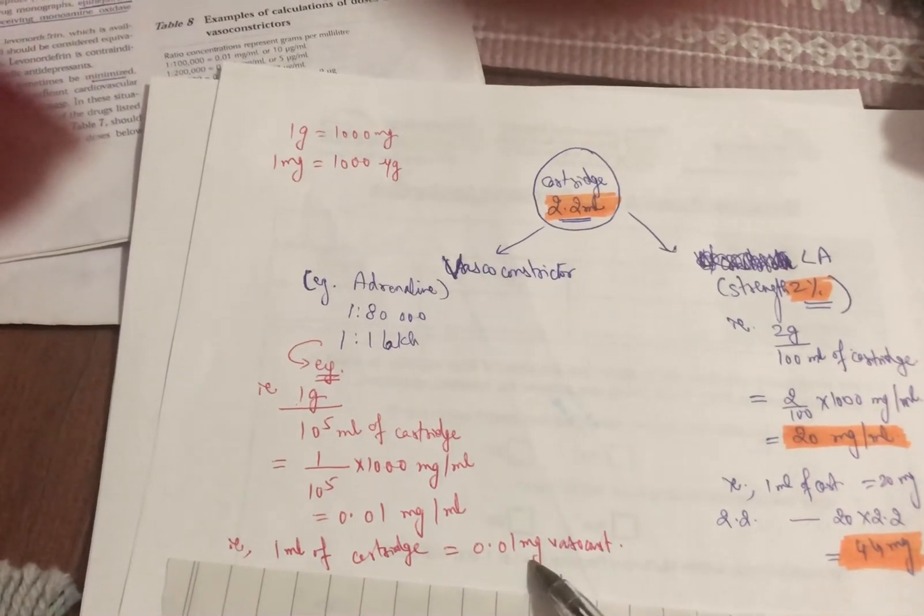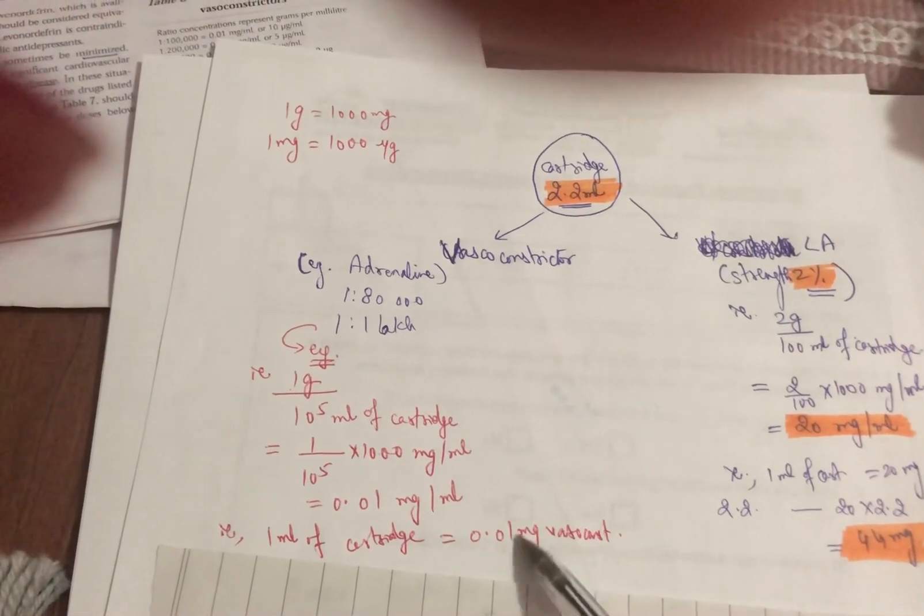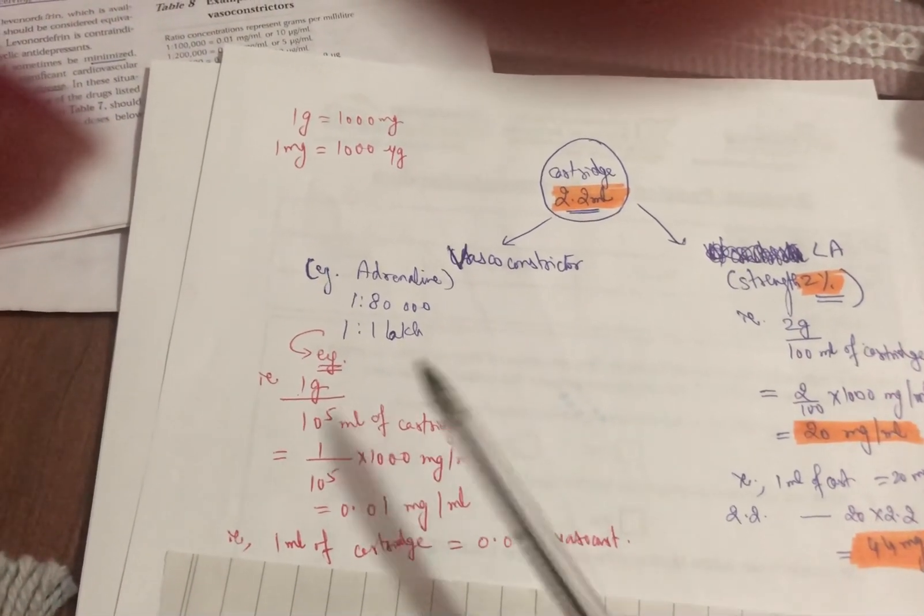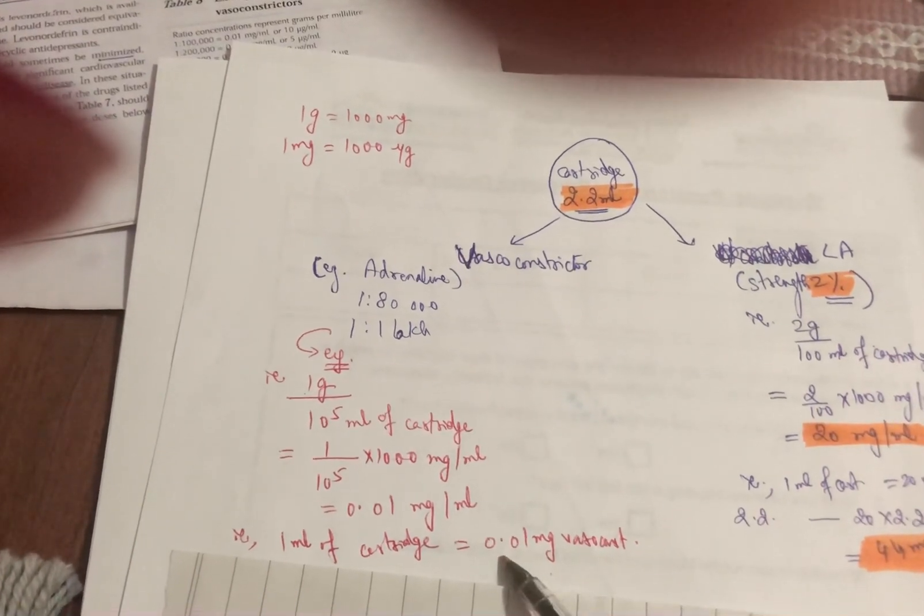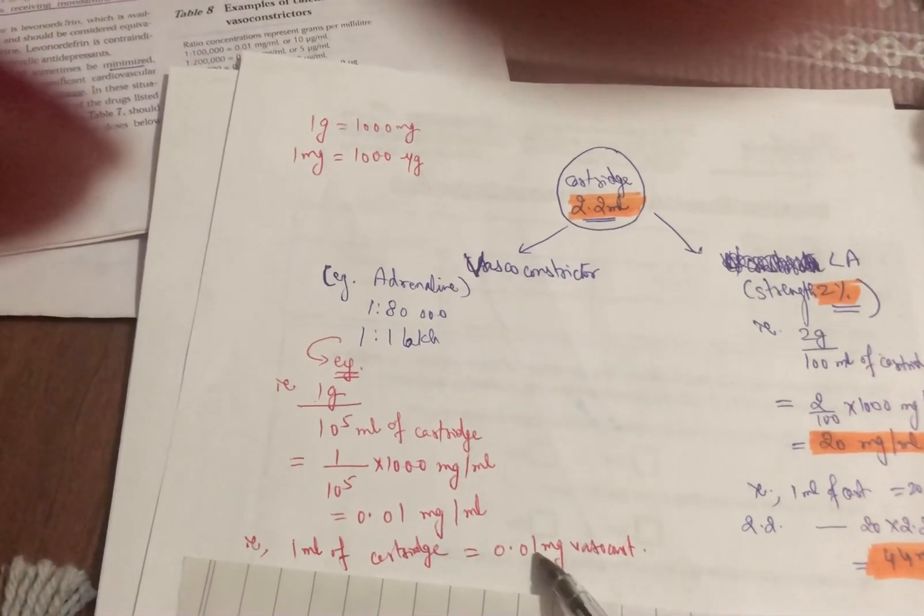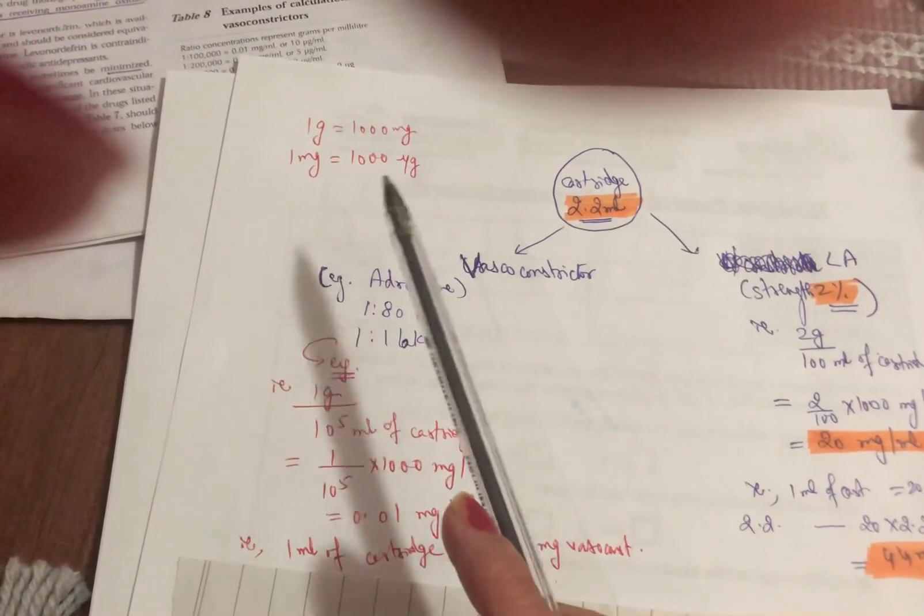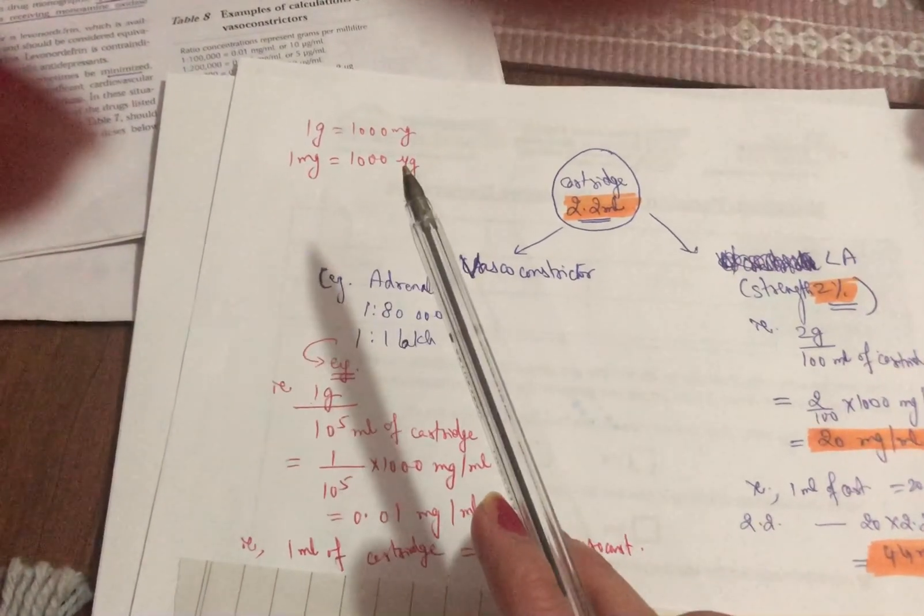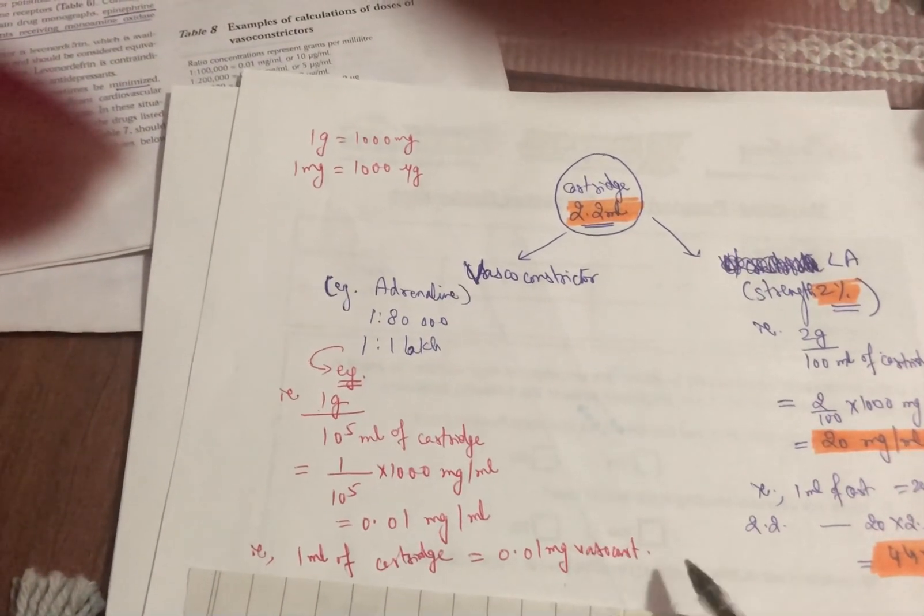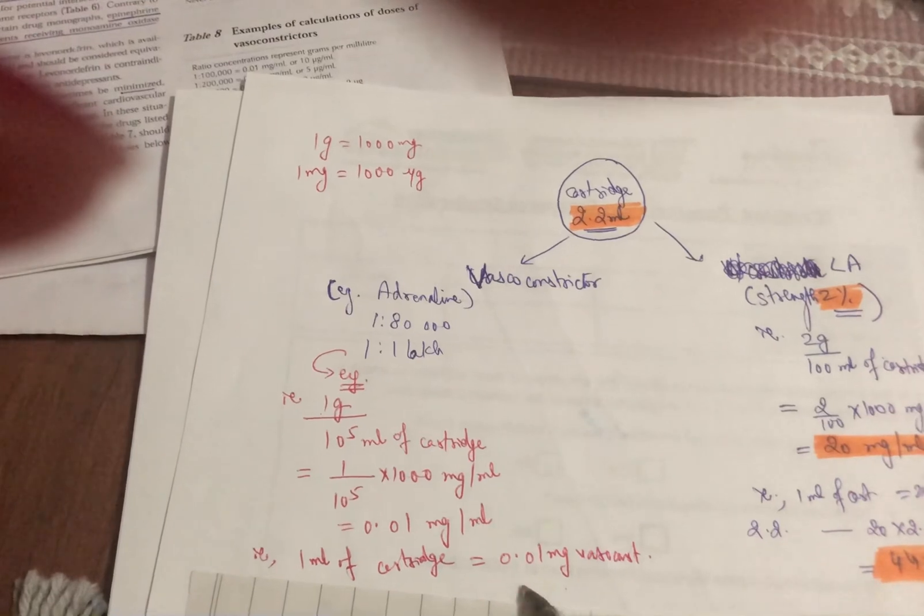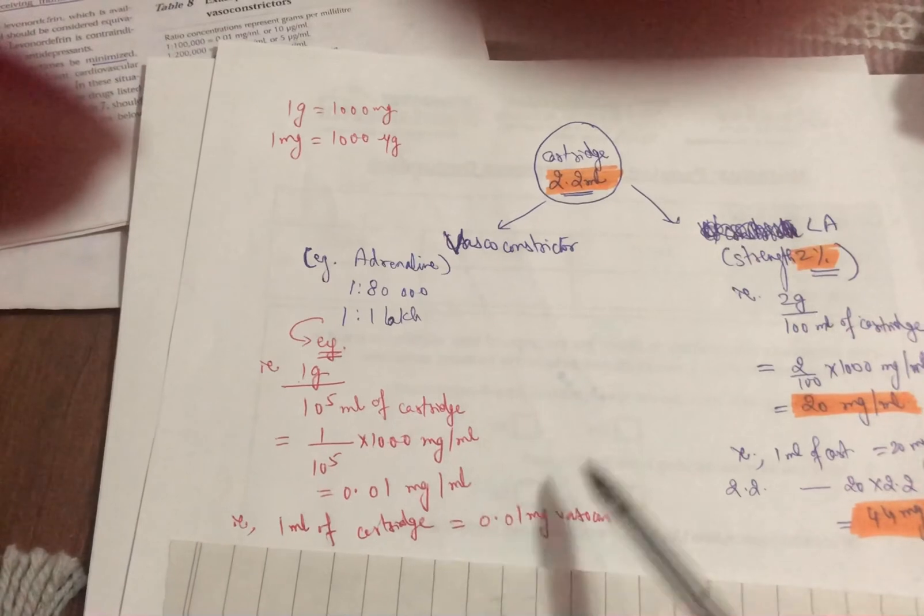Or let's say in the question it only wants to know what is the dose of the vasoconstrictor, like what's the amount in the milligrams if it's talking about the 1 to 1 lakh, so you can find it out like this. And if it wants to give the answer in micrograms, we know that 1 milligram equals 1000 micrograms, so you simply need to multiply it with 1000. It will be 0.01 into 10 raised to power 3.